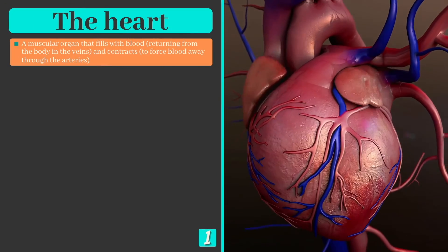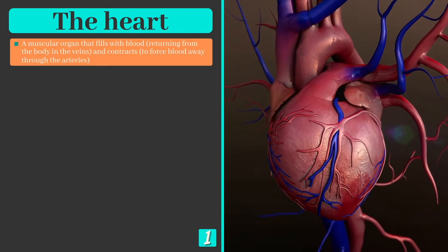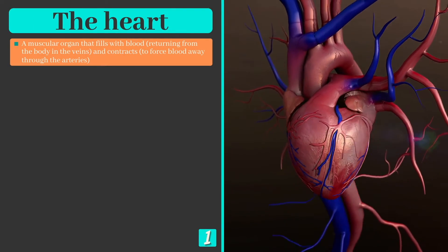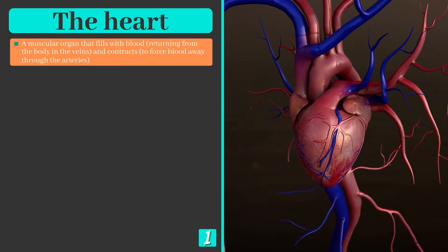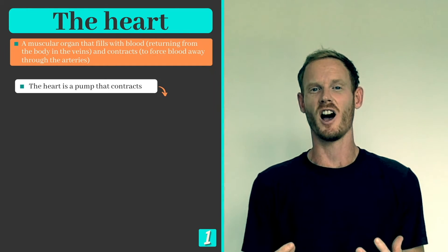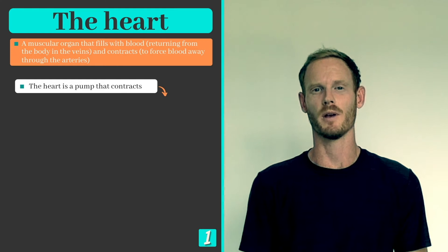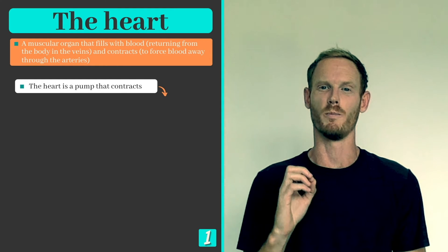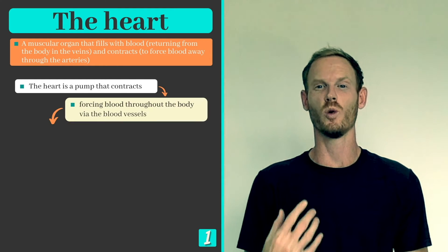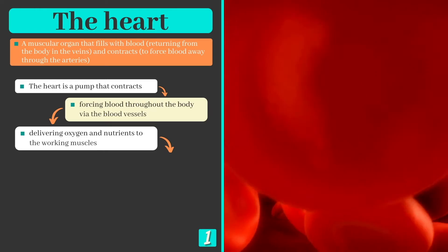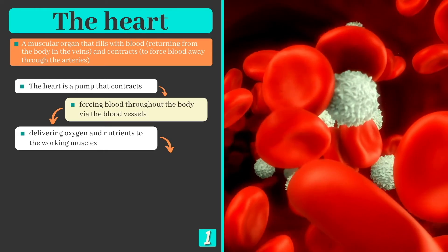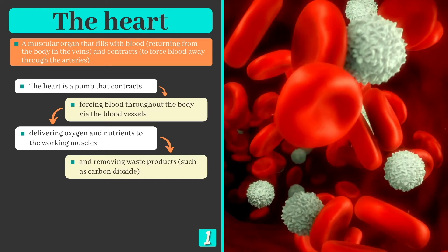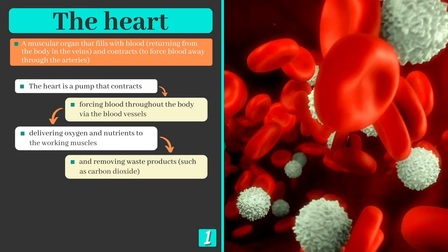The heart can be defined as a muscular organ that fills with blood returning from the body in the veins and contracts to force blood away through the arteries. Essentially the heart is a pump — every time it contracts or beats it forces blood throughout the body, delivering oxygen and nutrients to the working muscles and removing waste products such as carbon dioxide.